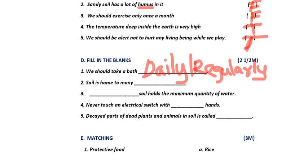Second blank: soil is home to many — blank. You can write animals or small animals, either is fine. Third blank: blank soil holds the maximum quantity of water. Maximum water means which soil? Clay soil. You can write clay — C-L-A-Y — or clayey. The answer is clay soil.